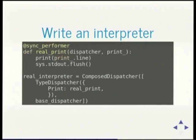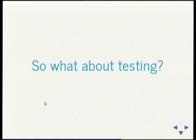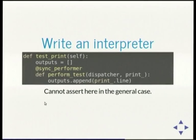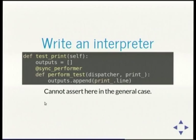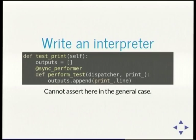The base dispatcher knows how to deal with generators, regular functions, and all the sort of boilerplate that you'd kill yourself recreating every time. Testing is actually quite interesting — we just write a different interpreter. We write an interpreter for testing, and that's where we avoid all the IO, the expensive stuff like talking to disk, and all the things that can cause confusion like global state. The test print says: I'm going to get some outputs.